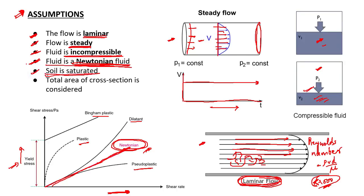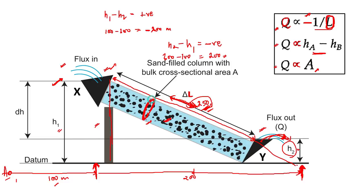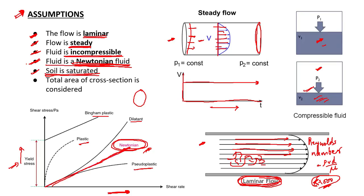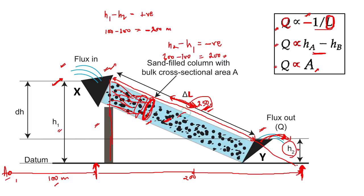Last assumption is that the total area of cross-section is considered. The soil is saturated, and the complete area of cross-section is taken. The water may be flowing only around the pores, but we are still considering the whole cross-section without considering the sediments separately, because we already know that the water is coming from the pores — it is traveling inside the connected pores.